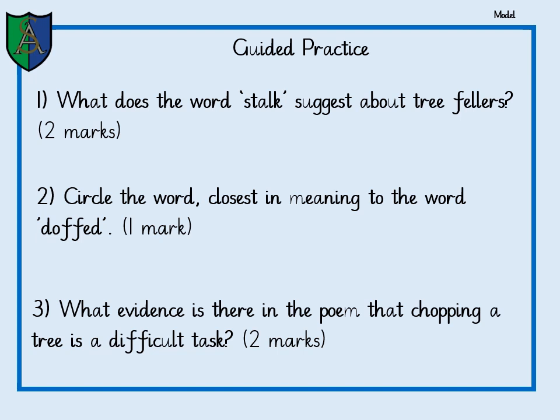Number three says: what evidence is there in the poem that chopping a tree is a difficult task? Well, the answer to the last question just helped us a bit with that. One piece of evidence is that they had to doff their jackets. Another might be that it took them a couple of tries — see if you can find the quote in the poem that shows they weren't successful on their first attempt. See if you can find another piece of evidence from the poem that suggests chopping the tree is a difficult task.